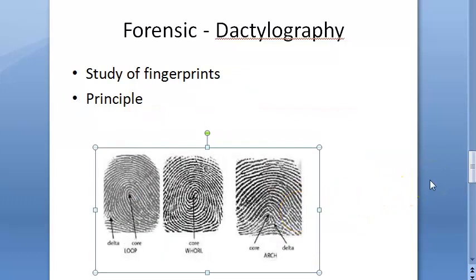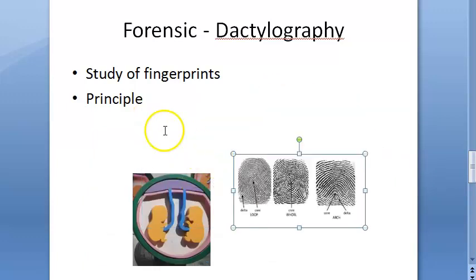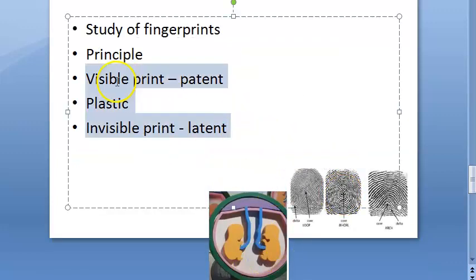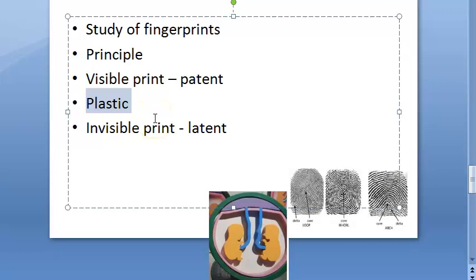At a crime scene, there are three types of fingerprints. A visible or patent print can be seen directly — made by blood, dirt, oil, or similar substances. A plastic print is an impression left on a soft surface like butter, soap, or cheese. A latent print is invisible and requires additional processing or development to become visible.